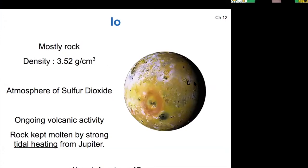Its yellow and orange appearance is because of sulfur compounds that react with its surface. Its atmosphere is composed of sulfur dioxide, which comes from volcanic activity. And the rock inside of Io is kept molten by tidal heating from Jupiter.